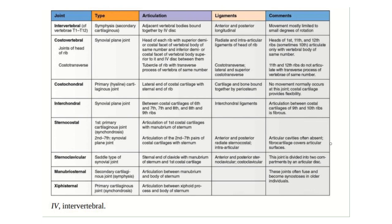The joints are listed as follows: we have the intervertebral joint, the costochondral joint, the costovertebral joint, the interchondral joint, the sternocostal joint, the sternoclavicular joint, the manubriosternal joint and the xiphisternal joint. These names are quite self-explanatory. The intervertebral joint is the joint between two vertebrae. The costovertebral joint is between the ribs and the vertebrae.